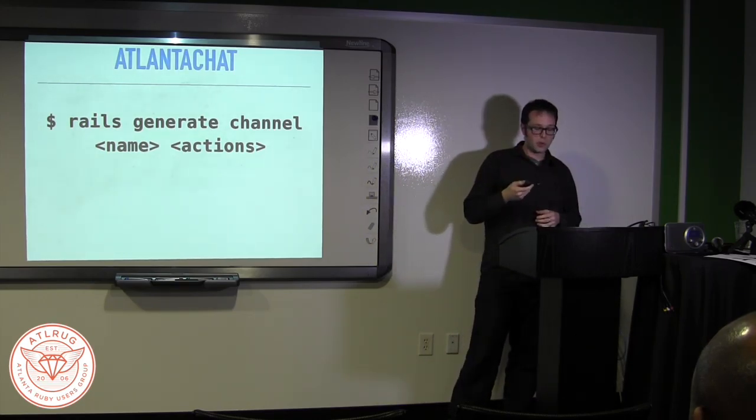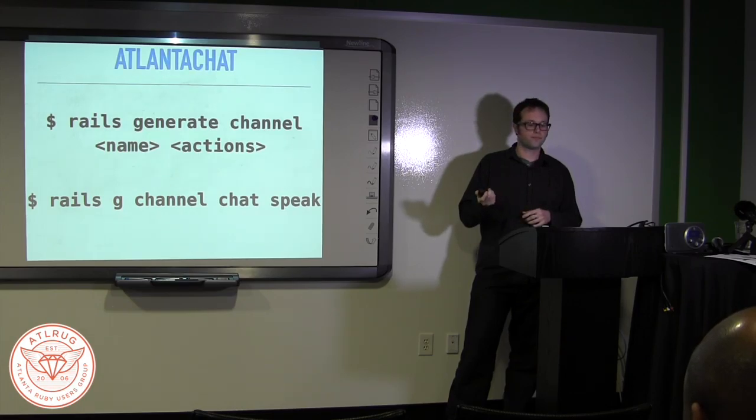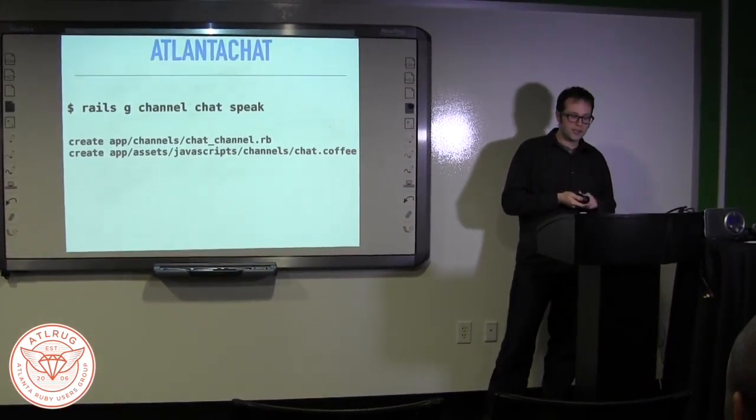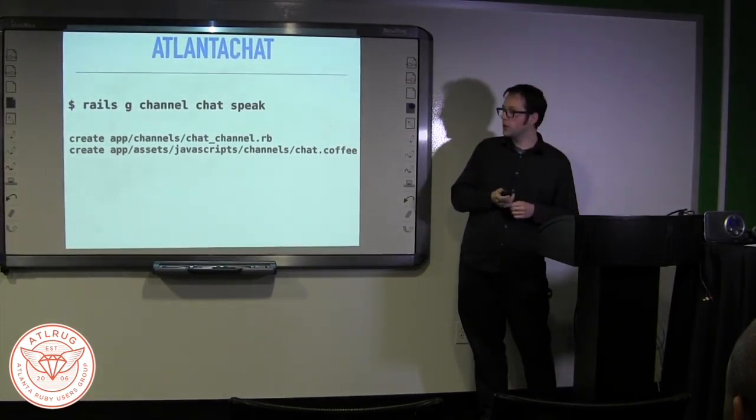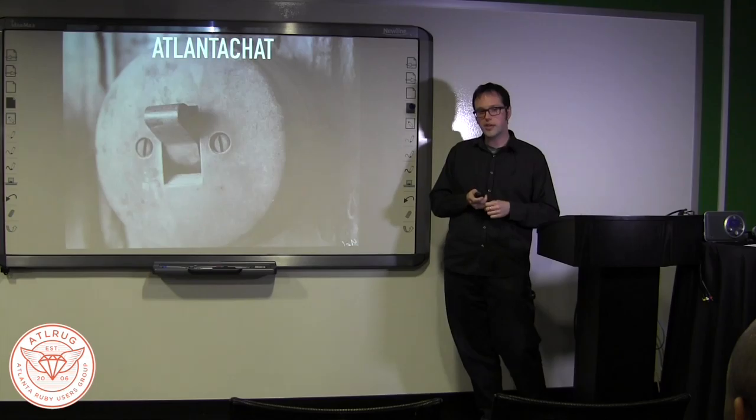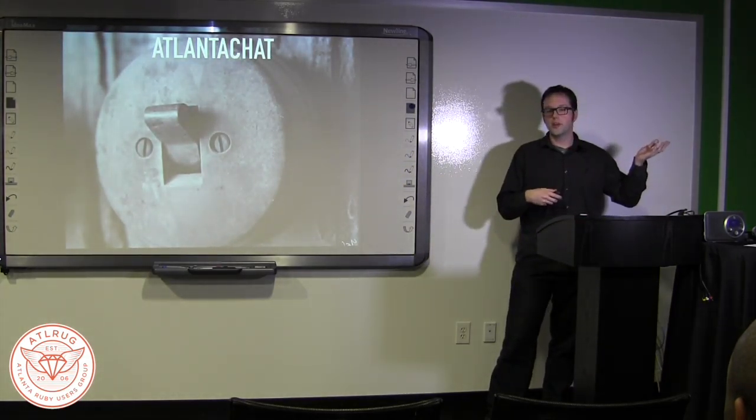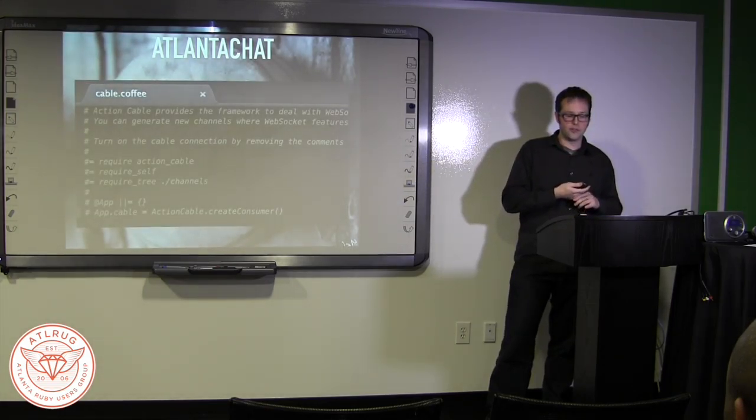To do anything with Action Cable features in Rails 5, you need to generate a channel first. Without a channel, you can't define a connection and your WebSockets have nothing to broadcast over. So this is the format for the new generator. It requires a name and accepts optional actions. For Atlanta Chat, we'll generate a chat channel with a speak action. The command is going to output this in your shell: the creation of a chat channel rb in your app channels directory and a chat.coffee in your JavaScript's channel directory. Before we look at these, we have to turn Action Cable on. By default, it's off. There's two places you turn it on, one on the client side and one on the server side.